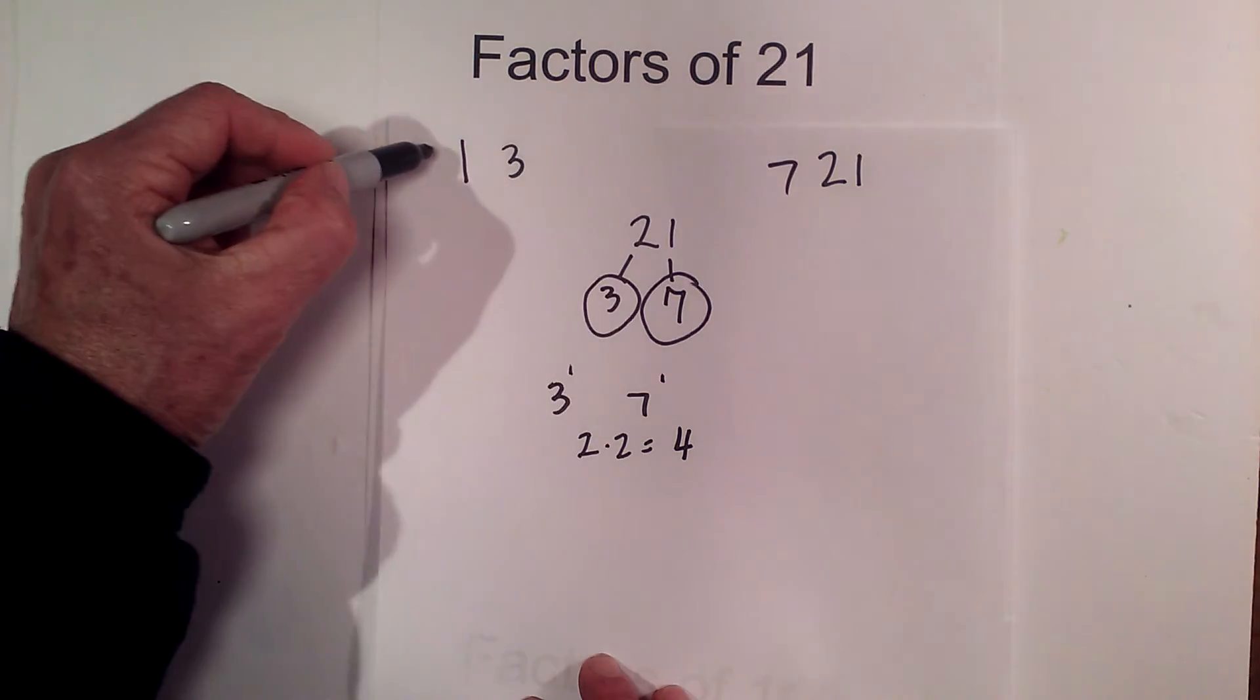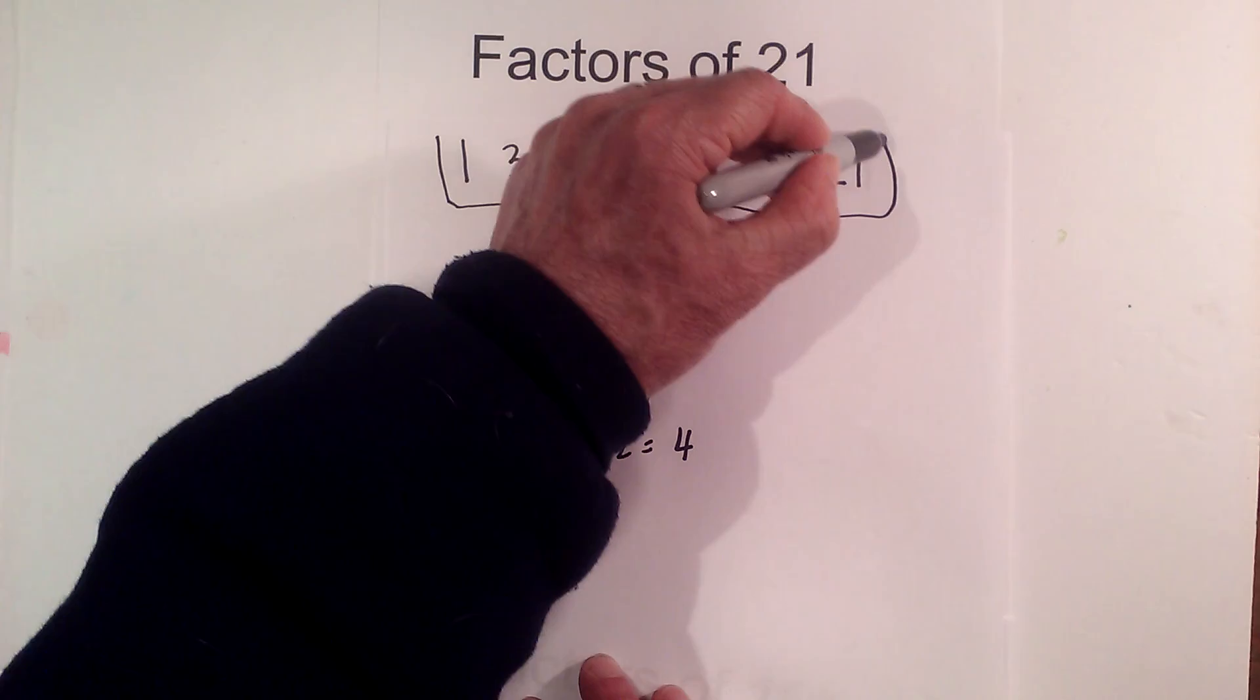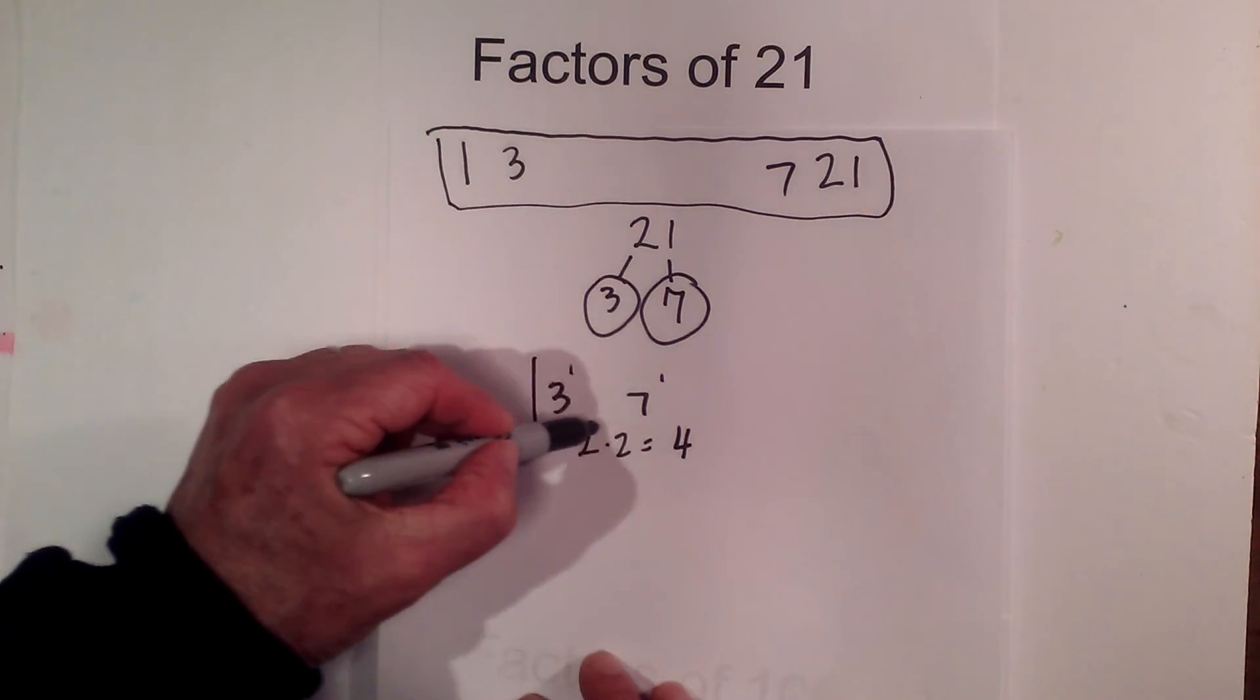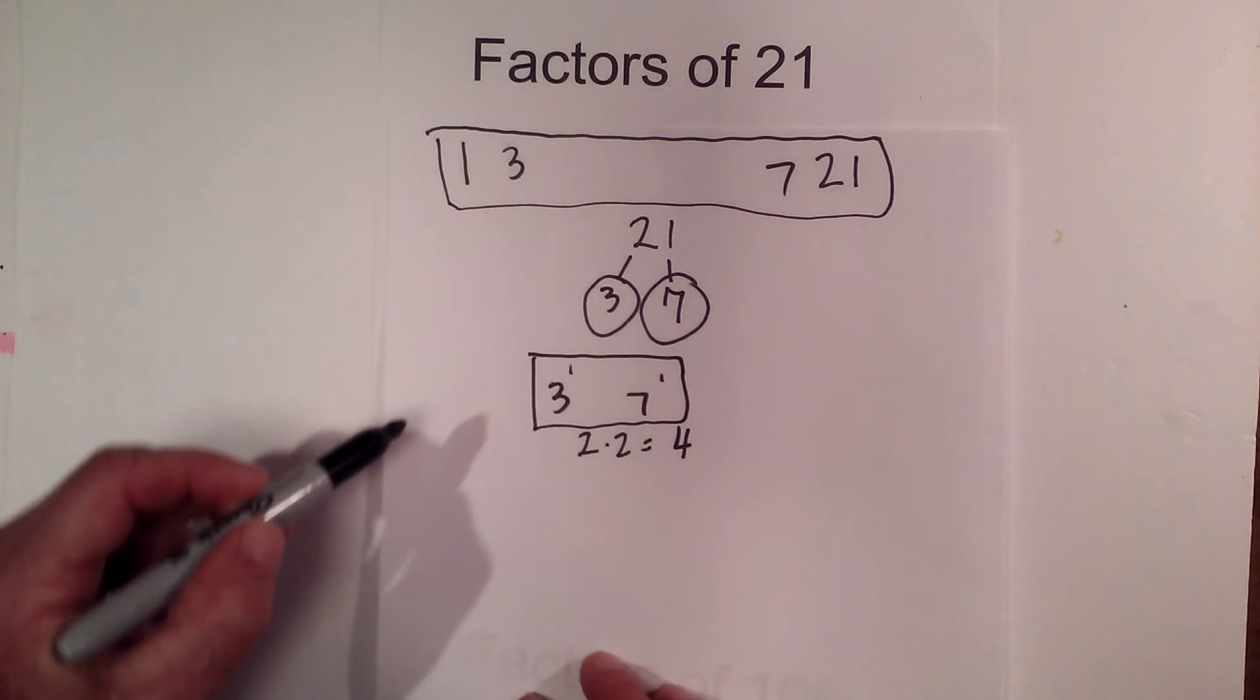So here are the factors of 21, and here are the prime factors of 21.